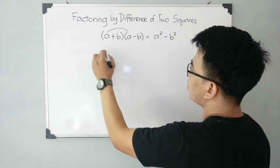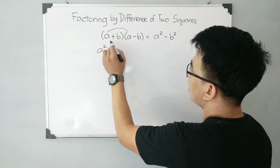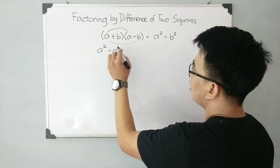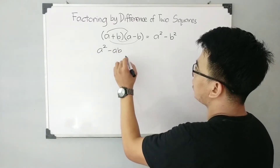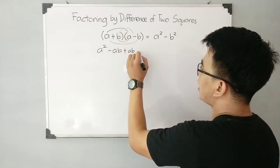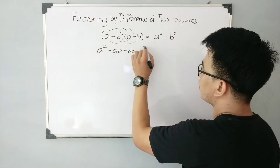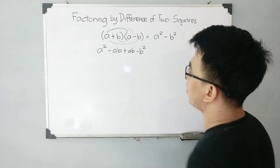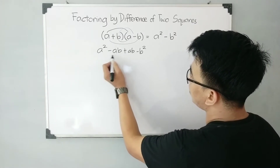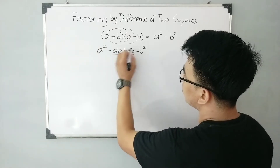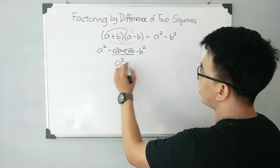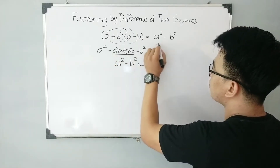Let's try a times a — that will give you a squared. And then a times negative b, that is negative ab. And then b times a, that will give you plus ab. And then for b times negative b, that is negative b squared. Simplifying this expression, we can see that negative ab plus ab is equal to zero, and what remains is a squared minus b squared, which is their product.